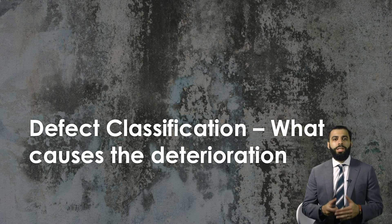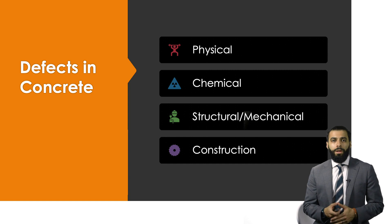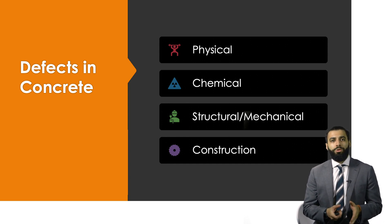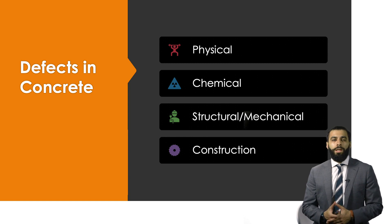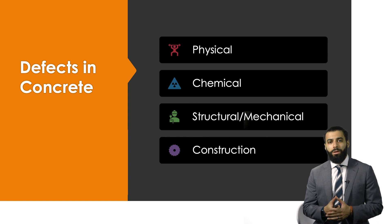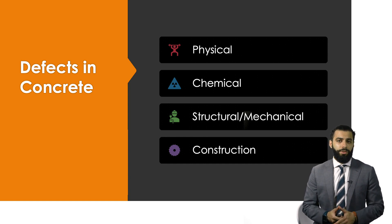Now that we've talked about defect forms, let's look at how these defects are commonly classified. The classification system is based on the cause of the defect: physical causes (for instance, weathering), chemical causes (such as alkali-silica reaction), structural or mechanical causes (for example, overloading the structure beyond what it can withstand), and construction causes (such as failing to vibrate the concrete after pouring, resulting in honeycombing). In the next videos, we'll examine each element of this classification system in more detail.